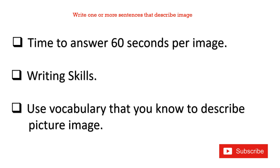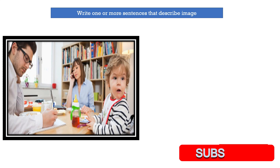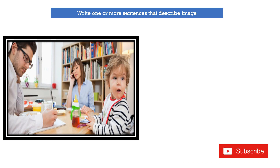Here we will do practice with two example images. Let's go inside for the first picture. Write one or more sentences that describe the image. This is a picture of a family — think about what you can write. There are two adults and one little child.